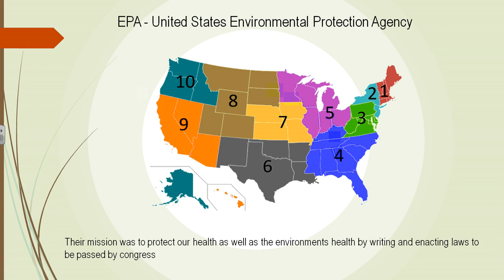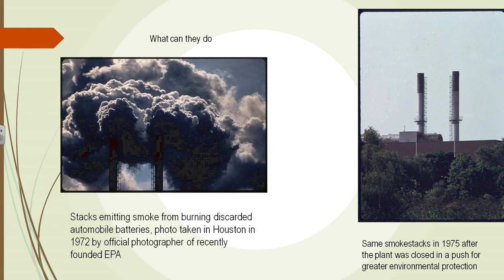These laws were enacted by Congress to protect mankind. Looking at two pictures, you can see in just a few short years what the EPA accomplished. On the left, you can see smoke coming from burning discarded batteries — you can't imagine the pollution that would be generated today. In just three years, those same smokestacks were shut down and the plants were closed in order to achieve better environmental protection.